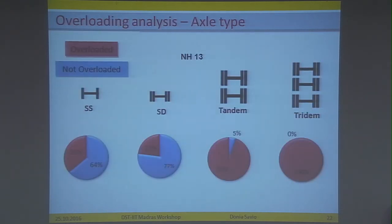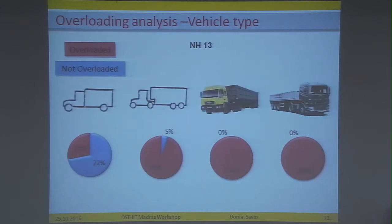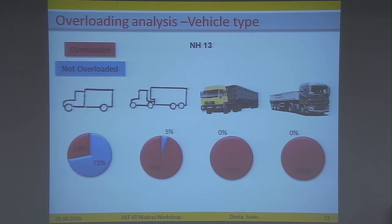This is the result from the axle-type overloading analysis. We see that tandem and tridem axles are almost fully overloaded. The vehicle-type overloading analysis also shows that vehicles with tandem and tridem axle combinations are almost fully overloaded. We now have a general idea of what percentage of vehicles are overloaded, but we do not know the extent of overloading.